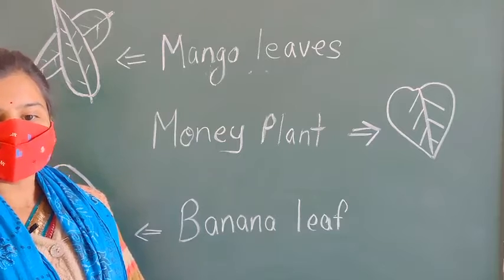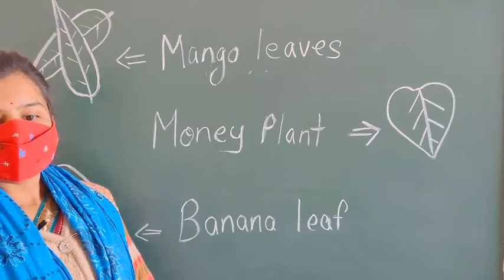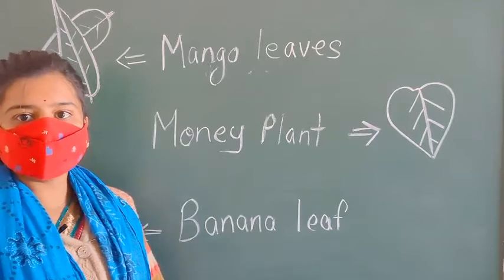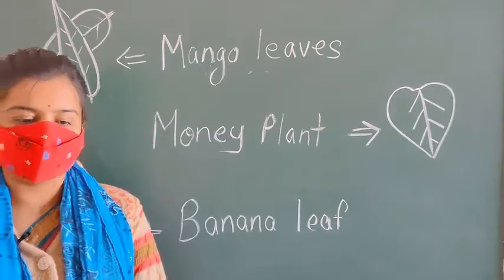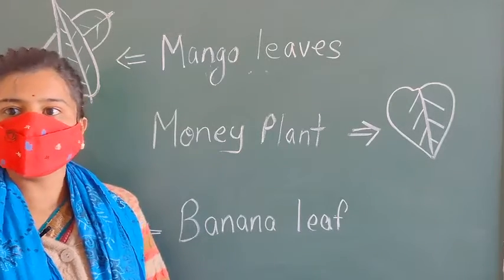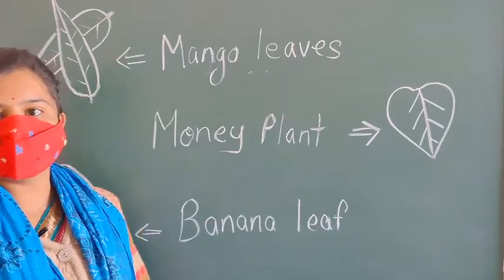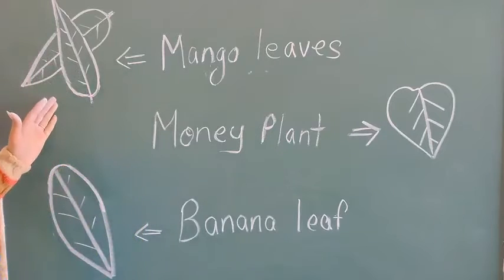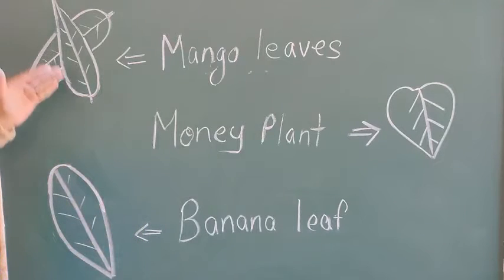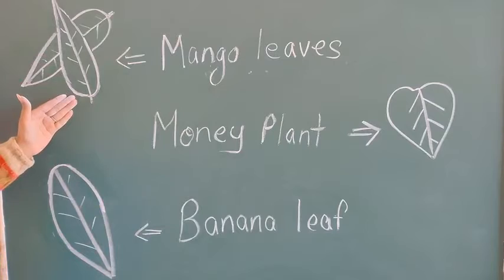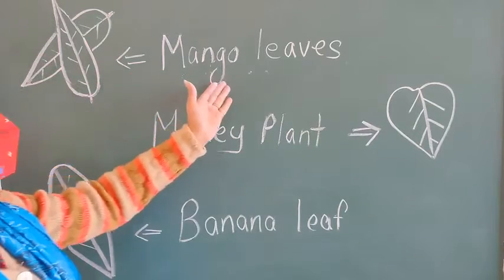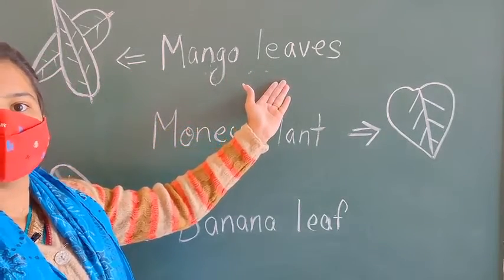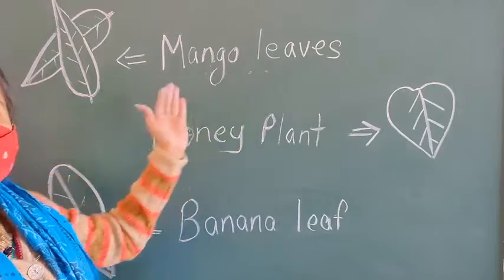Given below are the leaves of some very common plants. Yahan par hume kuch plants ki leaves dikhayi gayi hain. Aayiye bacho, hum dekhte hain ki kis paudhe ki kaisi patti hoti hai. Yahan par aapne ek saite se pointed aur doosri saite se round leaf dikh rahi hai. To yeh kaunse plant ki hai? Yeh mango ki leaf hai.